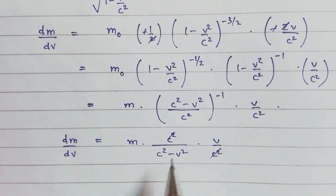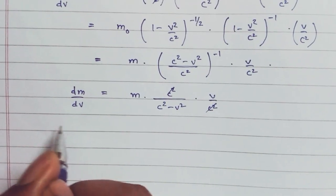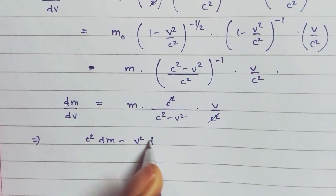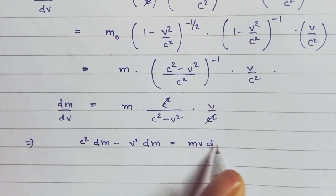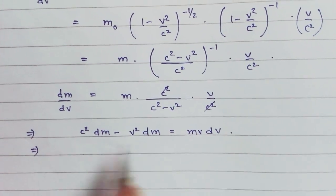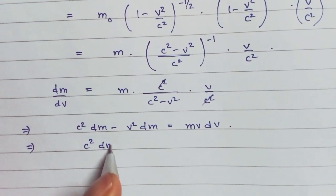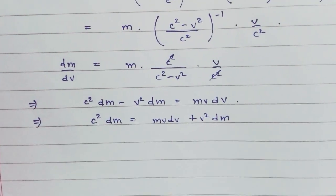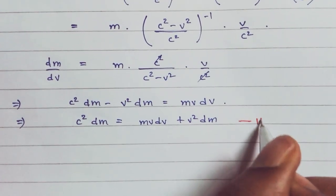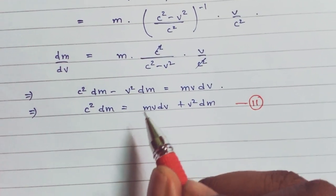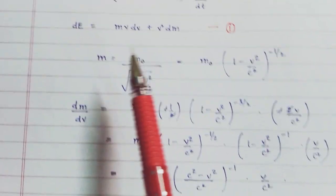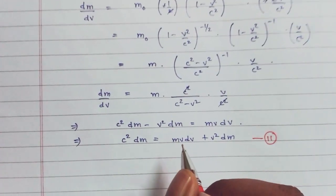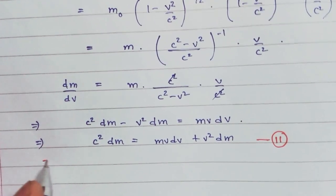Taking V to that side and C squared minus V squared to this side, we get C squared dm minus V squared dm equals mvdv. Take this to that side: C squared dm equals mvdv plus V squared dm. We've seen this somewhere. If this is equation two, we see that mvdv plus V squared dm is actually dE, so we can substitute dE here.